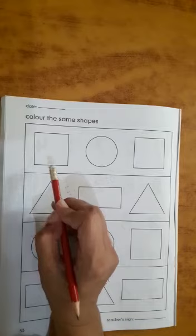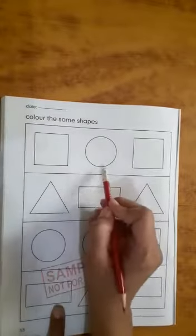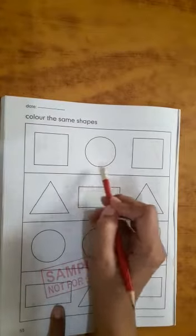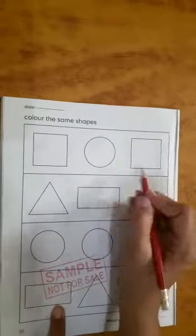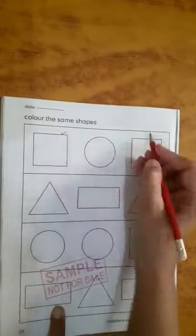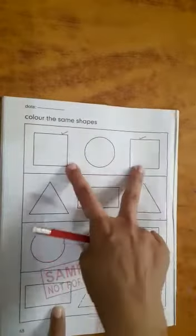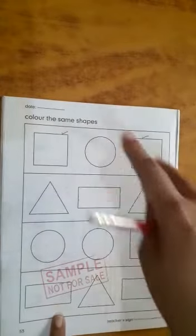Which shape is this? Square. This? Circle. And again we have square. So you have to colour square and square. These two are same. Now next.